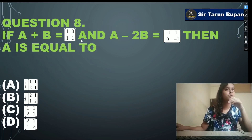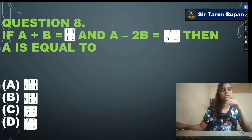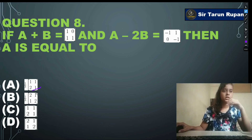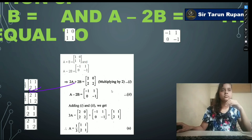Next question: if A+B = [1,0;1,1] and A-2B = [-1,1;0,-1], then A equals — option A: (1/3)[[1,1/3];[2,1]], option B: (1/3)[[2,1];[1,2]], option C: [[1,1];[2,1]], option D: [[2,1];[1,2]]. Our correct answer is option A. You can see the solution.